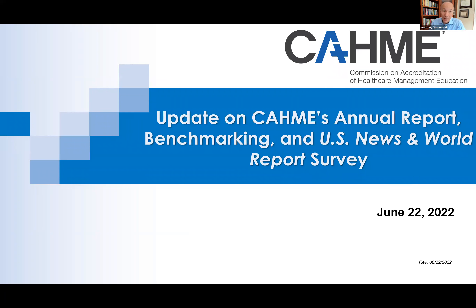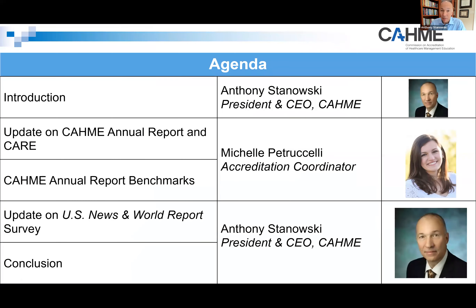So at the beginning, we're going to talk about CAMI's annual report process — how do you get data into our annual report tool — and also look a little bit about benchmarking, which is a really new, cool tool that we're offering, available for any accredited program, and it's free. It's part of being a CAMI accredited program. Michelle will go on and talk about editing information into the annual report and then how to run some benchmarks on the fly to compare yourself to organizations that you want to compare to.